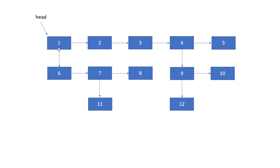Our aim is to flatten this level by level, so the result should be 1, 2, 3, 4, 5, then 6, 7, 8, then 9, 10, then 11 and 12. Flattening the complete list should print 1 through 12. To build this structure, I have five linked lists — one with 5 elements, then 3, 2, and 11 elements — and I point child pointers between them.